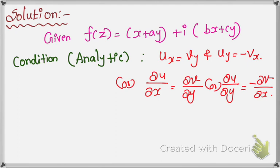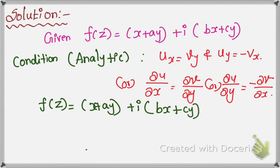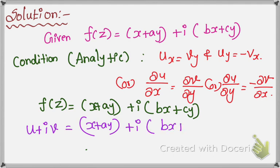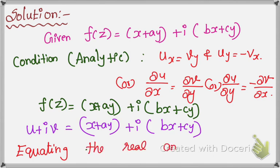So we write the given term. We apply f(z) = u + iv. That is: u + iv = x + ay + i(bx + cy). We are going to equate the real and imaginary parts.